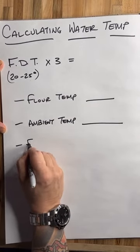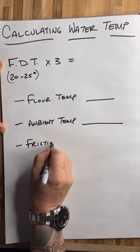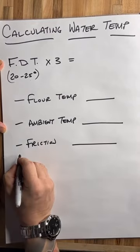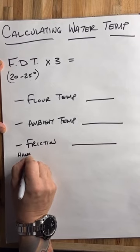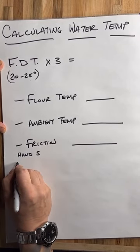Finally, we need to understand our friction factor. Friction is the amount of heat that's being generated by however you're mixing. If you're mixing by hand, we use a temperature of 5.